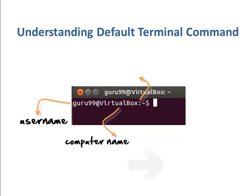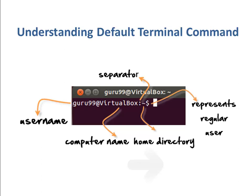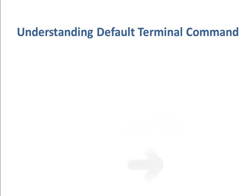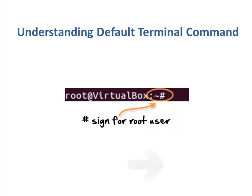The colon is a simple separator. The tilde sign shows that the user is working in the home directory. If you change the directory, this sign will vanish. Later we will learn how to move between different directories and you would see that the sign would not display. The dollar sign suggests that you are working as a regular user in Linux, while working as a root or the master user, the hash sign is displayed.